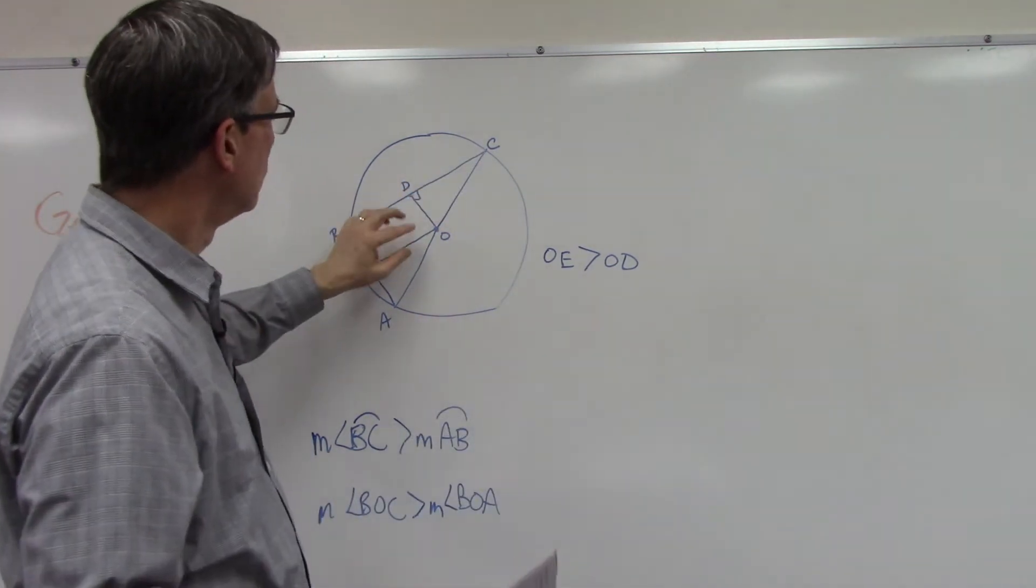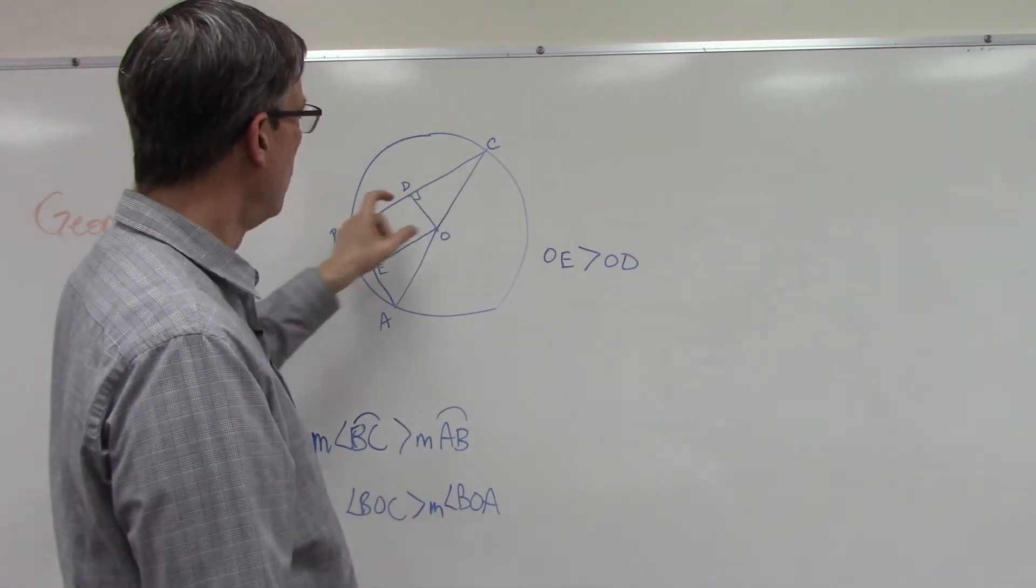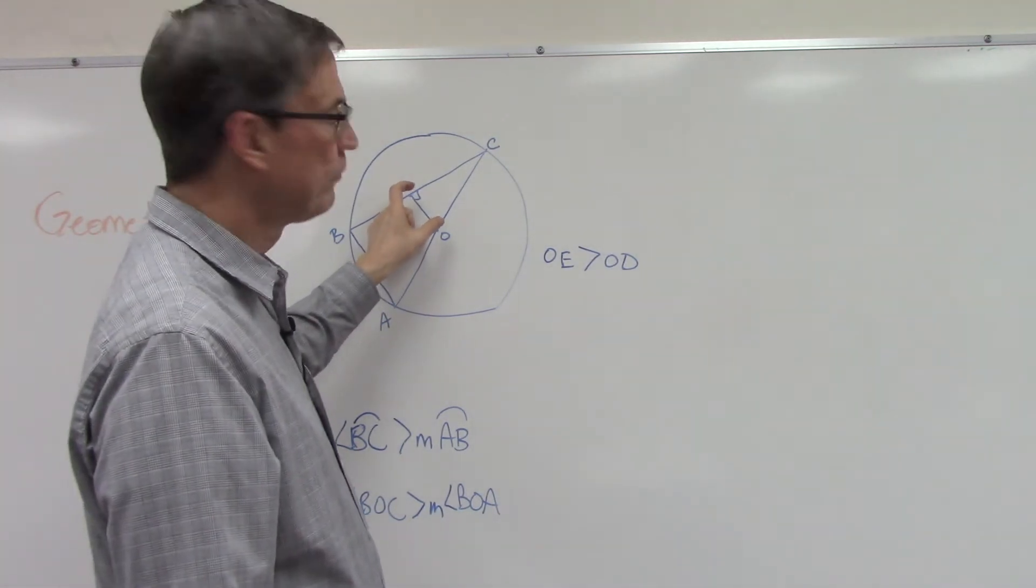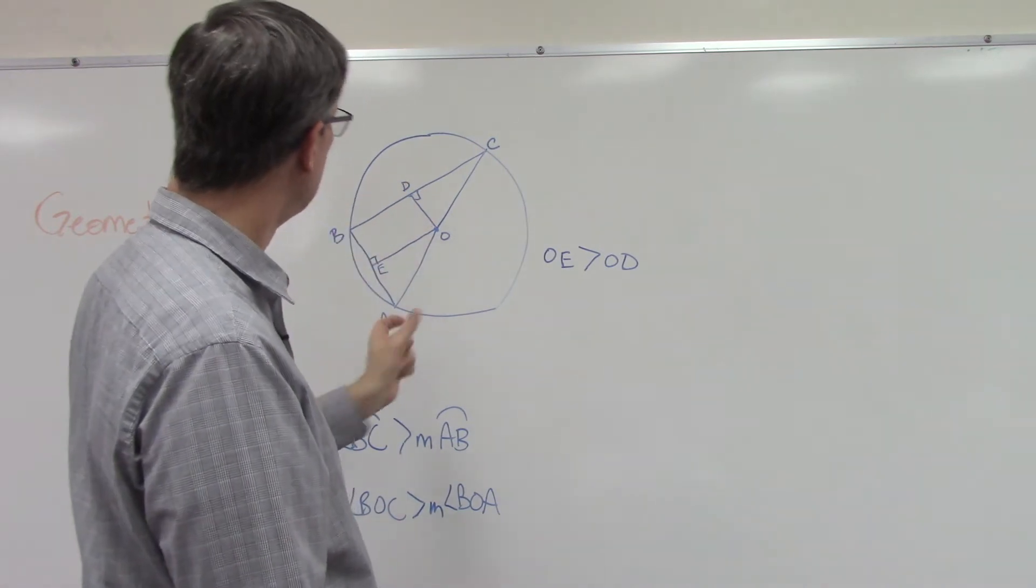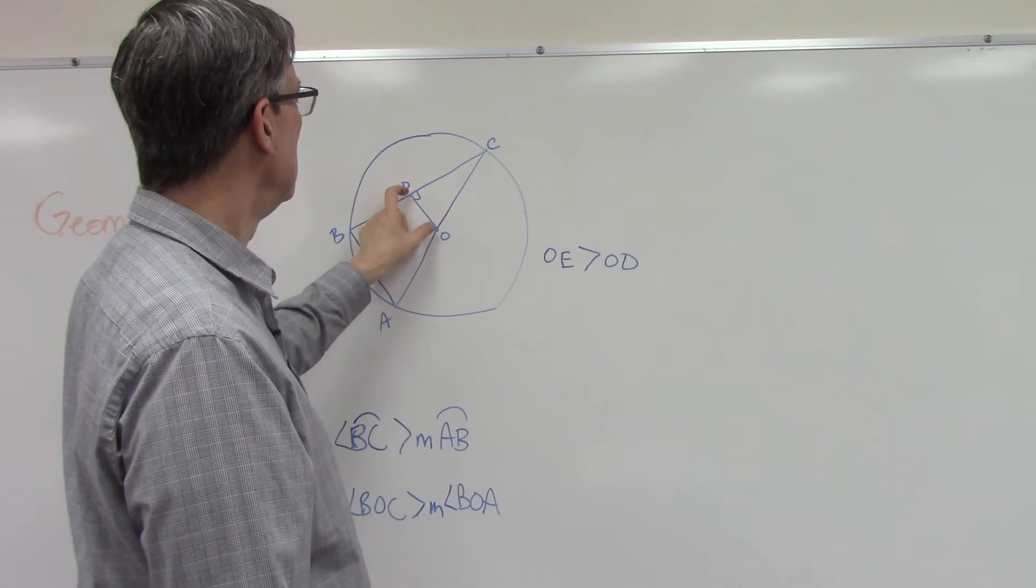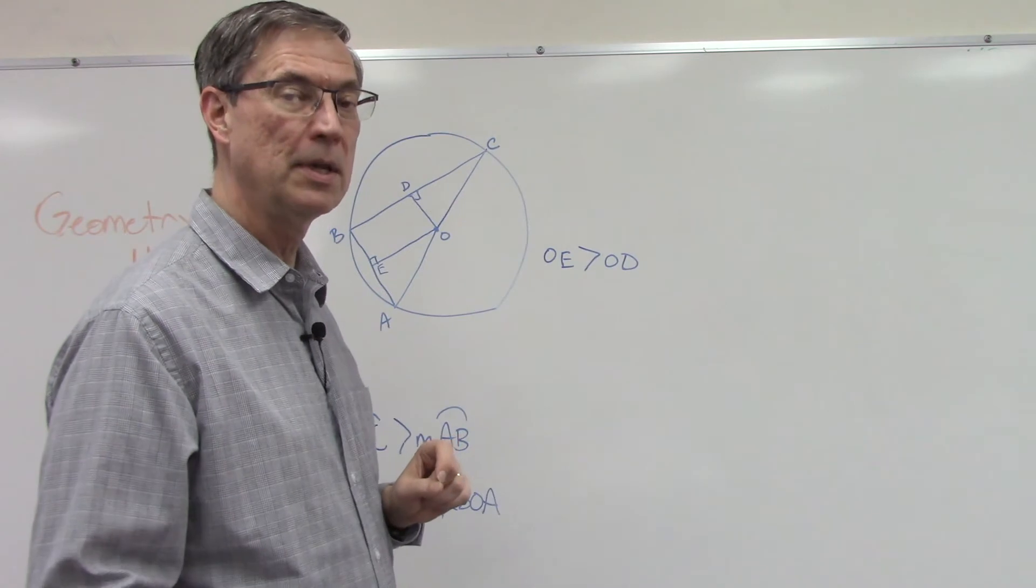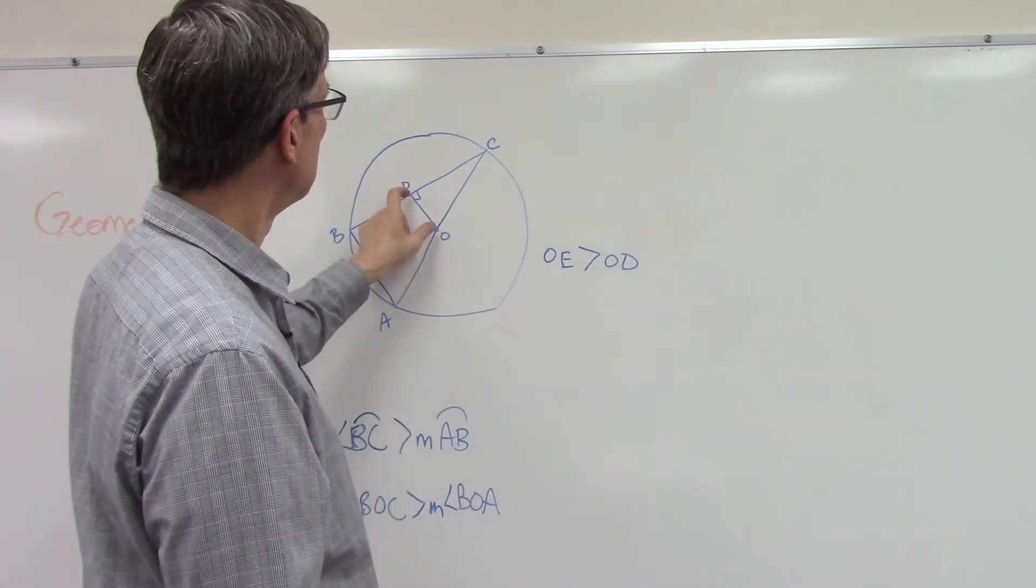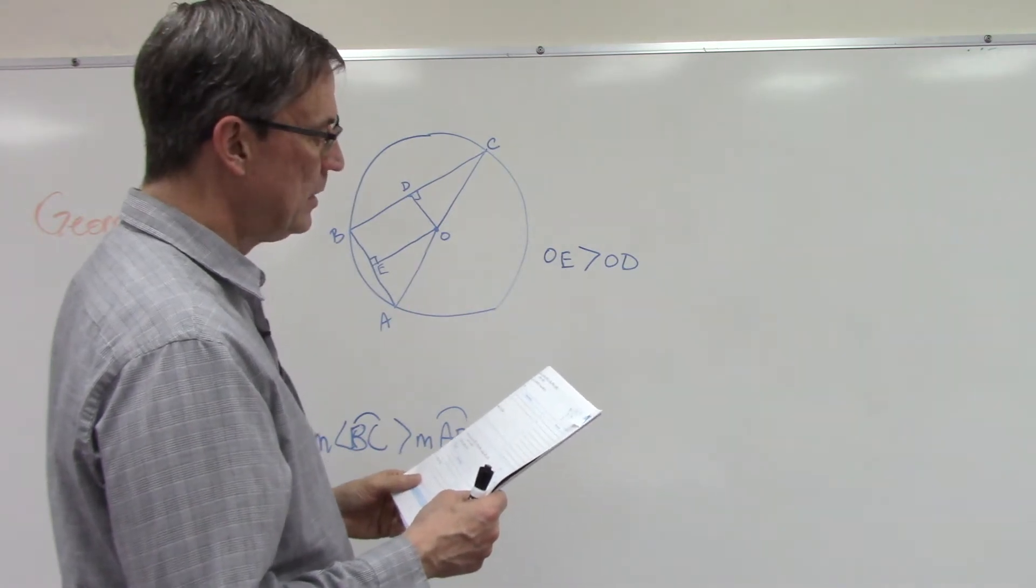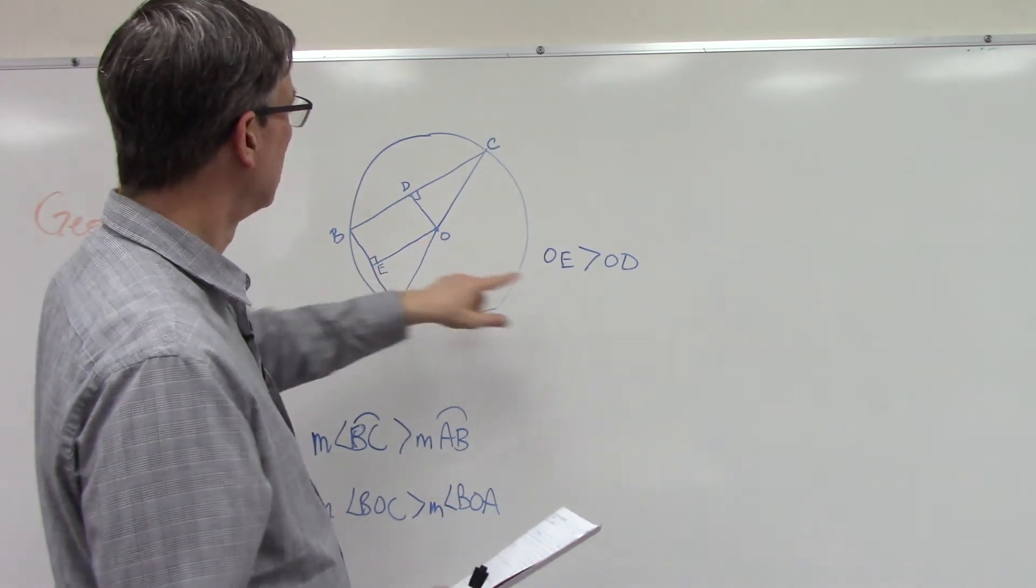What that tells us is the shortest distance between this chord and the center would be a perpendicular distance. We have this distance compared to this distance. I purposely drew it more exaggerated to show this is definitely closer than this one.